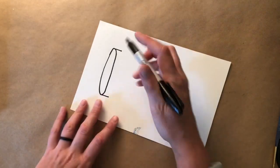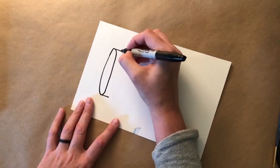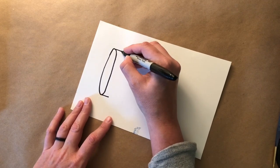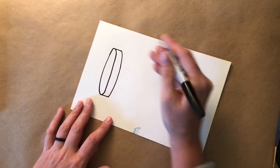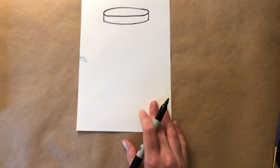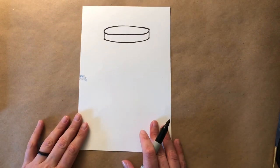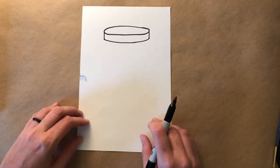I have to turn my paper. It makes it easier for me to draw that ellipse, so you can do that if that'll help you.